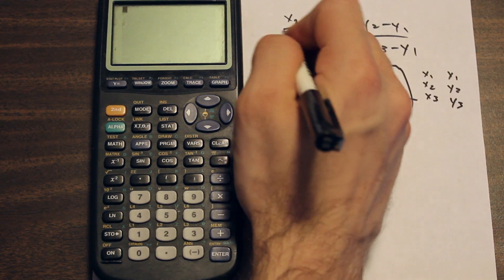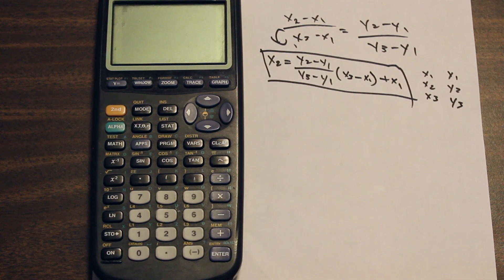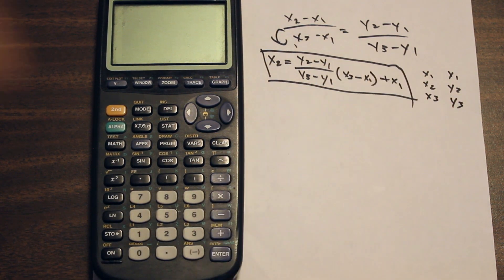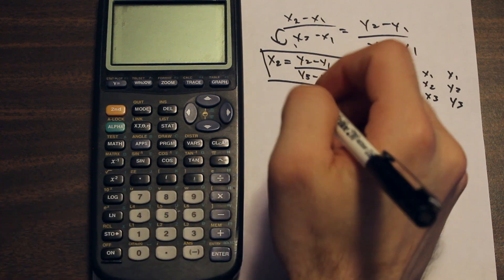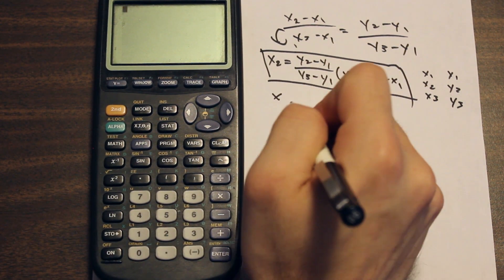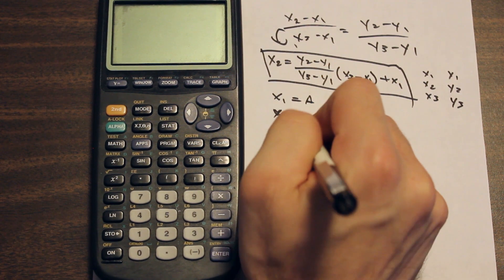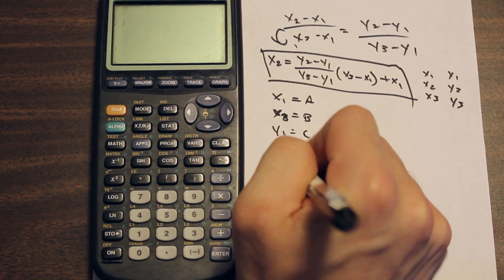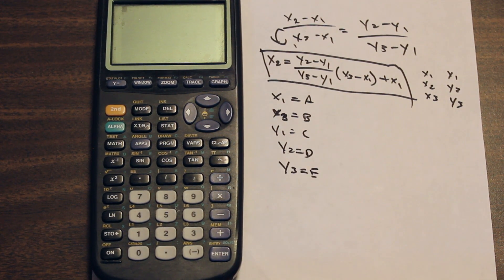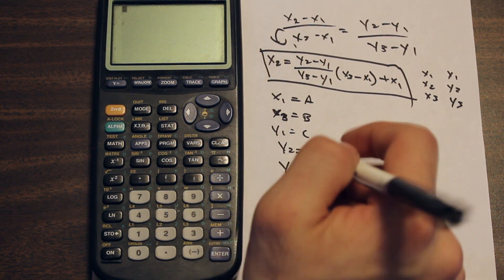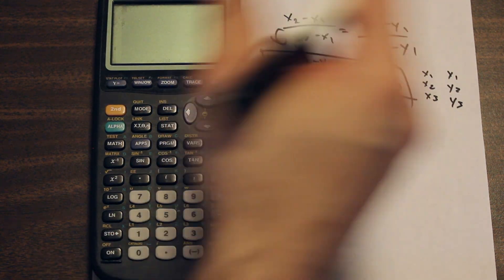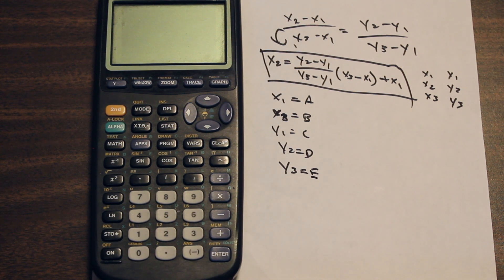Now we label the variables on the right side of the equation with letters. x1 is A, x3 is B, y1 is C, y2 is D, and y3 is E. We've labeled all these so we know which letter corresponds to which variable in the calculator. That will all make sense when I show you exactly what's going on in the calculator.